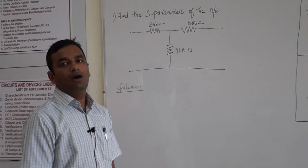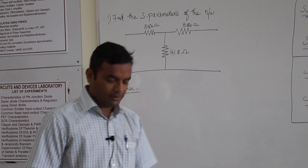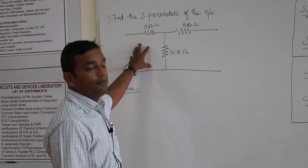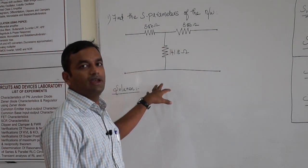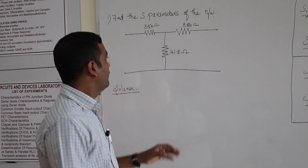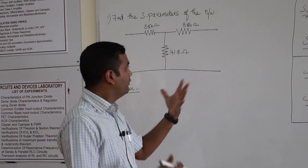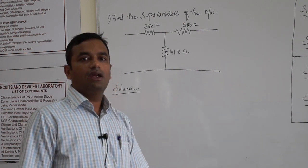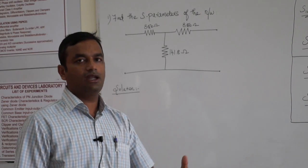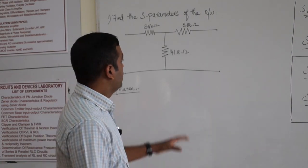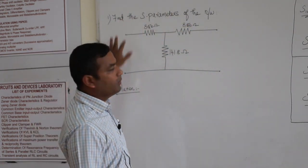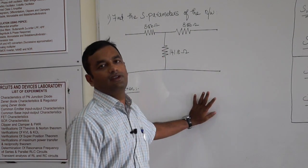In today's session, we will deal with how to attack S-parameter problems. There are two types of S-parameter problems. The first type is where you are given a network and asked to compute its S-parameters. The second type is where you are given an S-matrix and asked to analyze it and find out its characteristics. We will deal with the second type in the next class. In today's class, we will deal with the first type of problem, where we have a given network and compute its S-parameters.